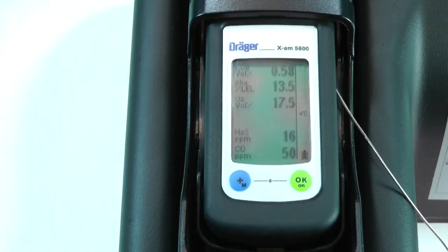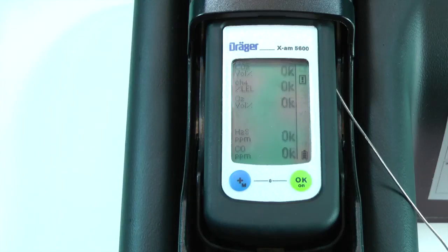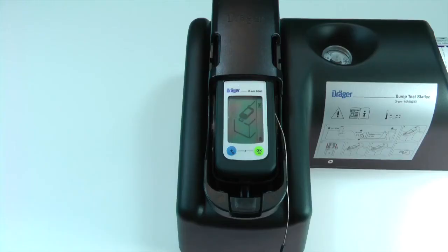After a few seconds the instrument should enter into audible and visible A1 and A2 alarms. Once the bump test is complete, the screen will display a graphic that indicates that the instrument can be removed.